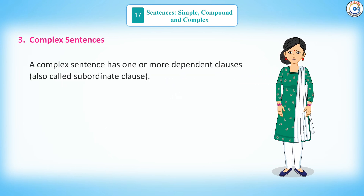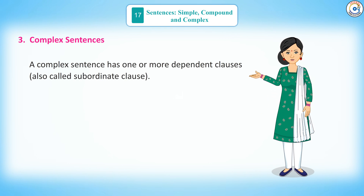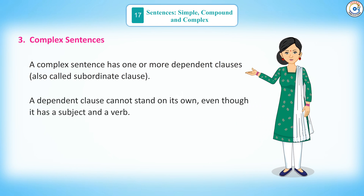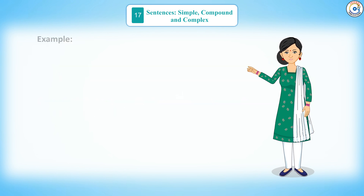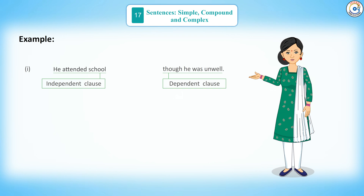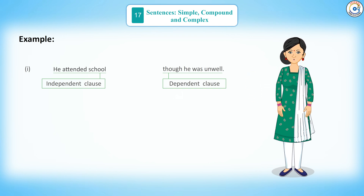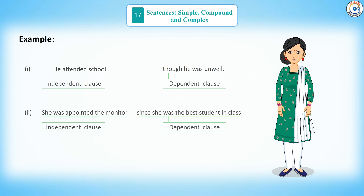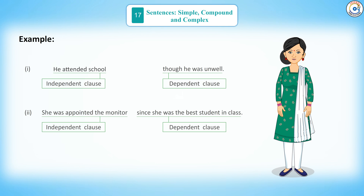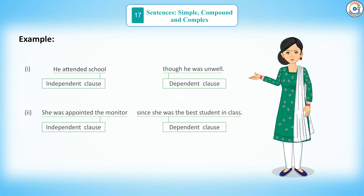3. Complex Sentences: A complex sentence has one or more dependent clauses, also called subordinate clauses. A dependent clause cannot stand on its own, even though it has a subject and a verb. Example 1: 'He attended school, though he was unwell.' – Independent clause + Dependent clause. Example 2: 'She was appointed the monitor since she was the best student in class.' – Independent clause + Dependent clause.